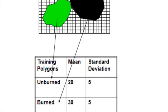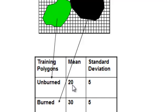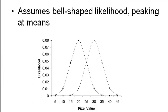Here's a hypothetical example. Let's say this is our satellite image and we have two simple polygons — one representing an unburned area and another representing a burned area. The average pixel value within the burn area is 30 with a standard deviation of 5, and the average in the unburned polygon is 20 with a standard deviation of 5. Both cover types have a bell-shaped curve peaking at the mean, and we'll use a classifier called the maximum likelihood classifier, which assumes that if you're close to the mean you have a high likelihood of belonging to that cover type.